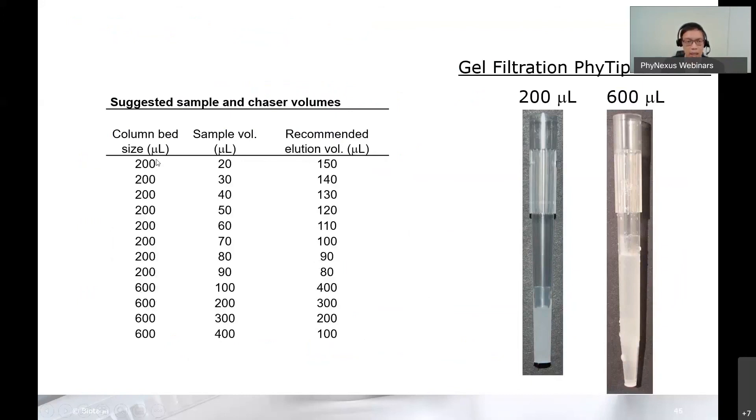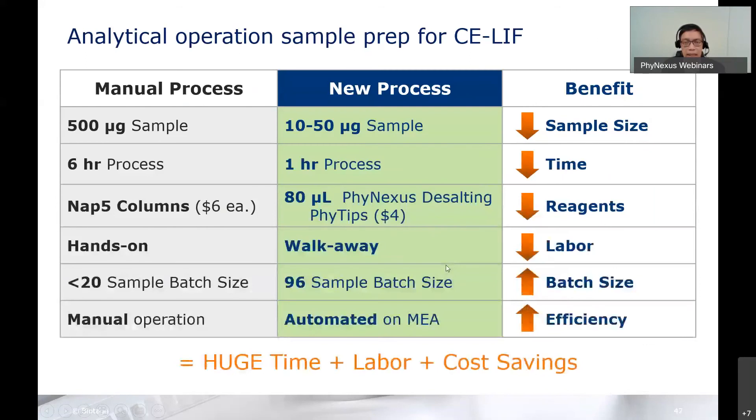I wanted to show again the column sizes we have—the 200 microliter column. These are the sample volumes we would recommend. The 600 microliter column: 100 to 400 microliters. These are the recommended elution volumes based on our work done with IgGs. If we have a sample volume that is 80 microliters, we would elute in 90 microliters. In some cases, we don't get any dilution really of your sample. If your sample injection is small, then we would need to dilute that—we would need 150 microliters to elute that if we added just 20 microliters of sample.